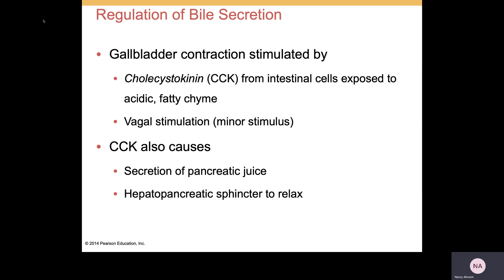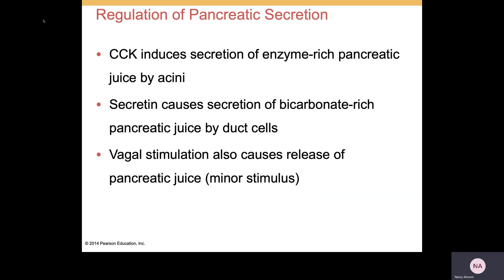Gallbladder contraction itself will be stimulated by CCK, or cholecystokinin, which is released from intestinal cells that are exposed to fatty chyme. Vagal stimulation provides a minor or minimal stimulus. CCK is also going to cause secretion of pancreatic juice, as well as trigger the relaxation of the hepatopancreatic sphincter. CCK specifically induces the secretion of that enzyme-rich pancreatic juice.